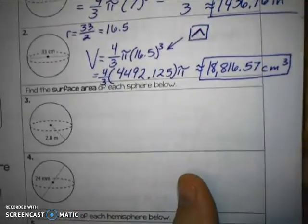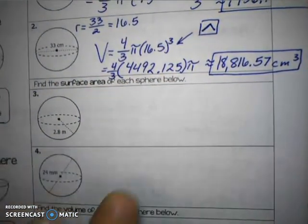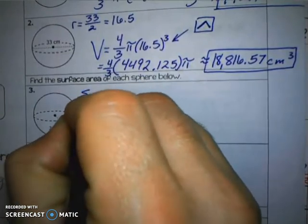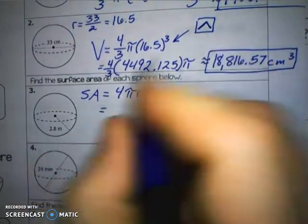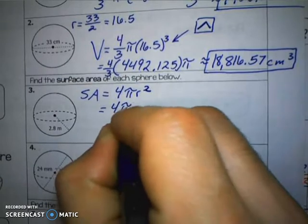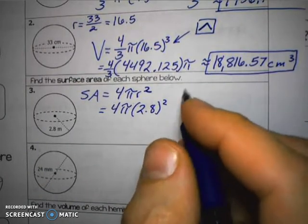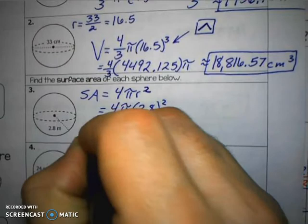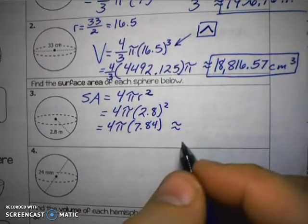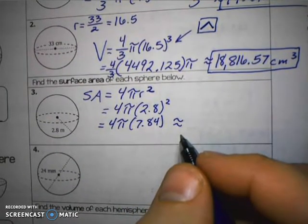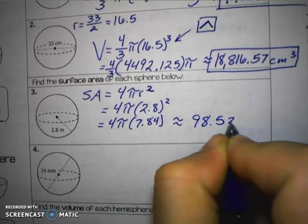Let's try some problems about surface area. The surface area of a sphere uses the formula 4π r squared — surface area is a square unit measure. The radius is 2.8, so it's 4π times 2.8 squared. We do our exponents first: 2.8 squared is 7.84. So we have 4 times π times 7.84, and doing all those calculations gives us 98.52 square meters.